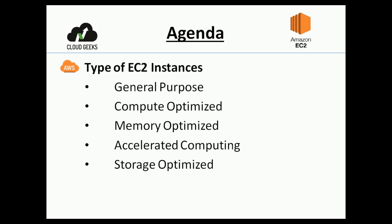You should be aware of all the instance types present in EC2. We will look into each of them one by one, get a brief idea about each, and then understand them using examples. Mainly there are five instance types available for EC2: general purpose, compute optimized, memory optimized, accelerated computing, and storage optimized.